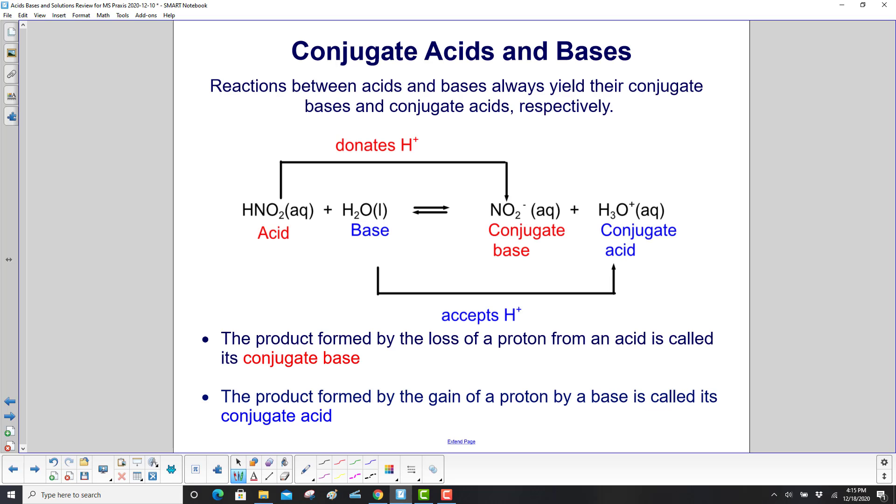Reactions between acids and bases always yield their conjugate bases and conjugate acids respectively. In this reaction, we have nitric acid in aqueous solution donates an H+ or proton, and here you have its conjugate base, nitrite, in aqueous solution.